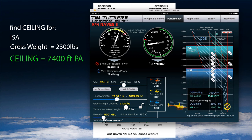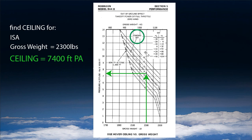In the charts we don't have that flexibility, but what we could do is draw our own ISA line into the graphic. All you need to do is shift about 10 degrees to the left at each altitude point and draw a new ISA line. That would help you compute ISA ceilings for plus 10 or minus 10 degrees ISA.